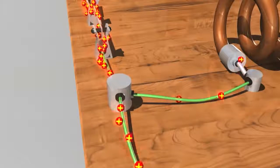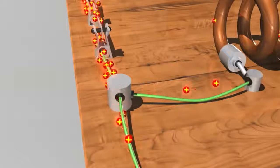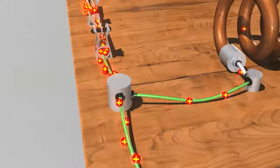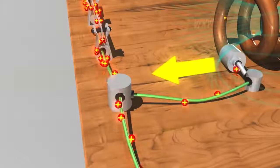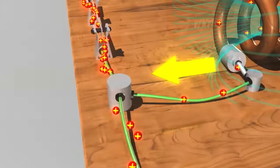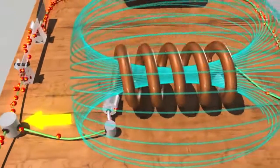At first, the current flows much more strongly towards the light bulb. This happens because as the magnetic field in the inductor grows, it induces its own voltage through Faraday's law. This is called electromagnetic induction.